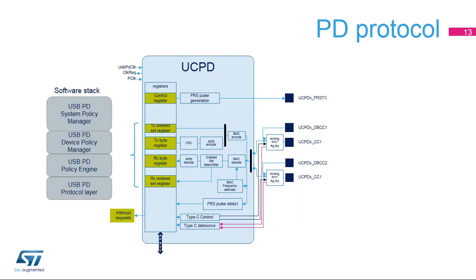The PD software stack is executed by the Cortex-M0+ core in the STM32G0. It is based on messages and events; events are reported through interrupts. Regarding messages, only the payload is under software control — the digital controller performs message encapsulation with preamble, start of packet, CRC, and end of packet. The software stack includes the protocol layer, the policy engine, the device policy manager, and the system policy manager. The system policy manager may control several PD ports to implement platform-level power management.